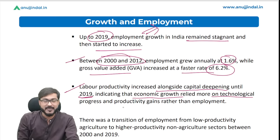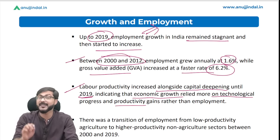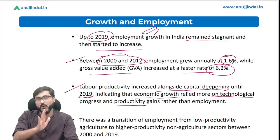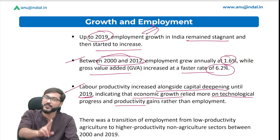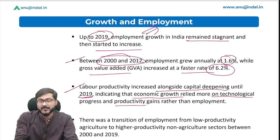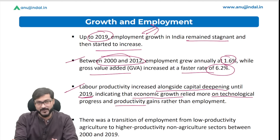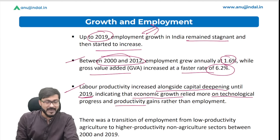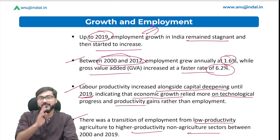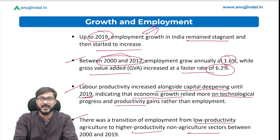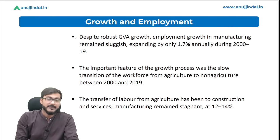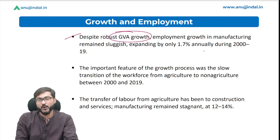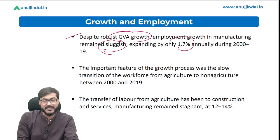This indicates that economic growth relied more on technological progress and productivity gains rather than employment generation. There was a transition of employment from low-productivity agriculture to high-productivity non-agriculture sectors between 2000 and 2019. Despite robust GVA growth, employment growth in manufacturing remained sluggish, expanding by only 1.7 percent annually during 2000 to 2019.